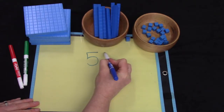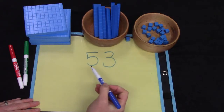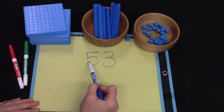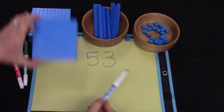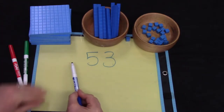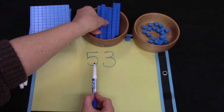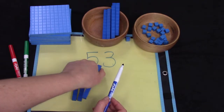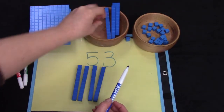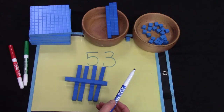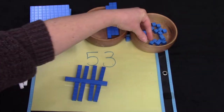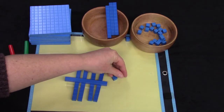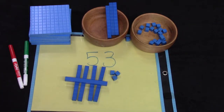What about the number fifty-three? Well this does not have three digits, does it? So how many groups of one hundred? None. How many groups of ten? Five of them: one, two, three, four, five. And how many singles? Three: one, two, three. This represents fifty-three.